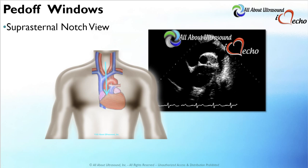Another window that should be evaluated with the PEDOF transducer is the suprasternal notch view. This should include not only the PEDOF continuous wave transducer, but also 2D imaging, color imaging, and continuous wave Doppler with a traditional imaging probe as well. The best patient positioning is the supine position with the head tilted slightly back. The transducer should be angled to access the aorta as it exits the heart, which may require tilting the transducer towards the heart and possibly slightly to the patient's right. The patient's arms should be positioned down by their side and out of the way.